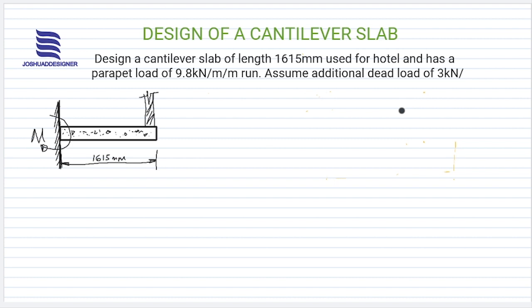We have a question here that says design a cantilever slab of length 1615 millimeters, which is 1.615 meters, used for hotel. This information is for occupancy. The hotel is for occupancy, which in turn would give us insight into the live load factors or live load values.